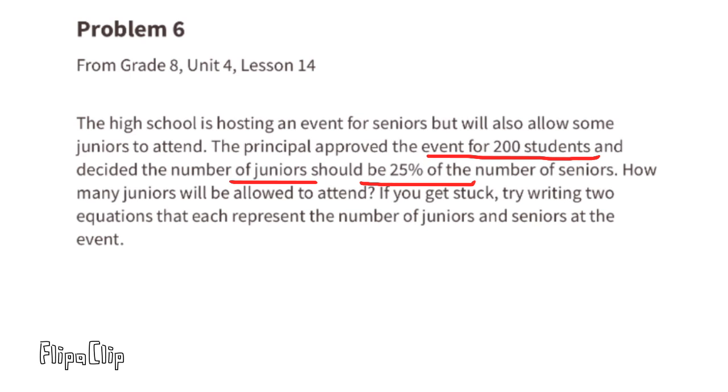If you get stuck, try writing two equations that each represent the number of juniors and seniors at the event. Seniors plus juniors equals 200. The amount of juniors equals 25% of the number of seniors, that's 25 hundredths times the number of seniors. Substitute J with 0.25 S.